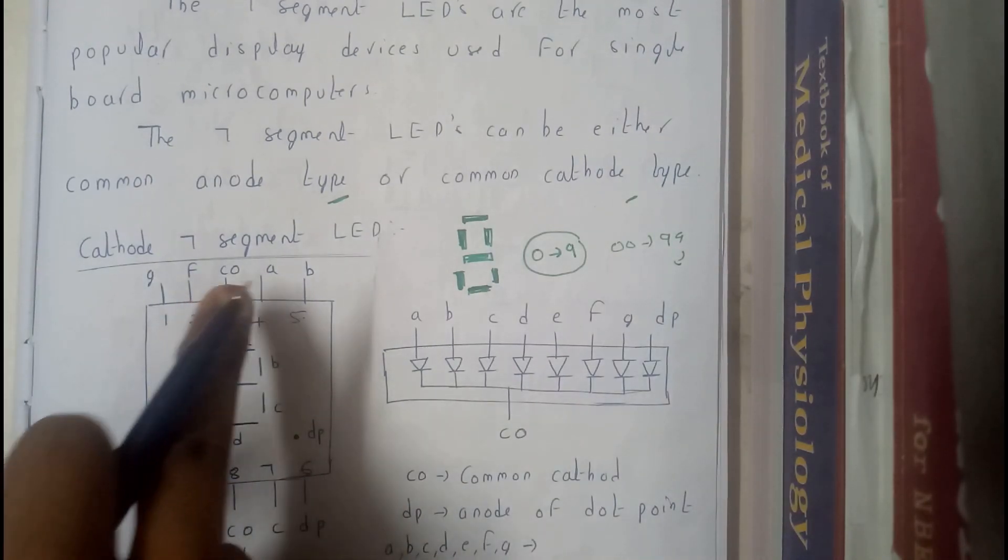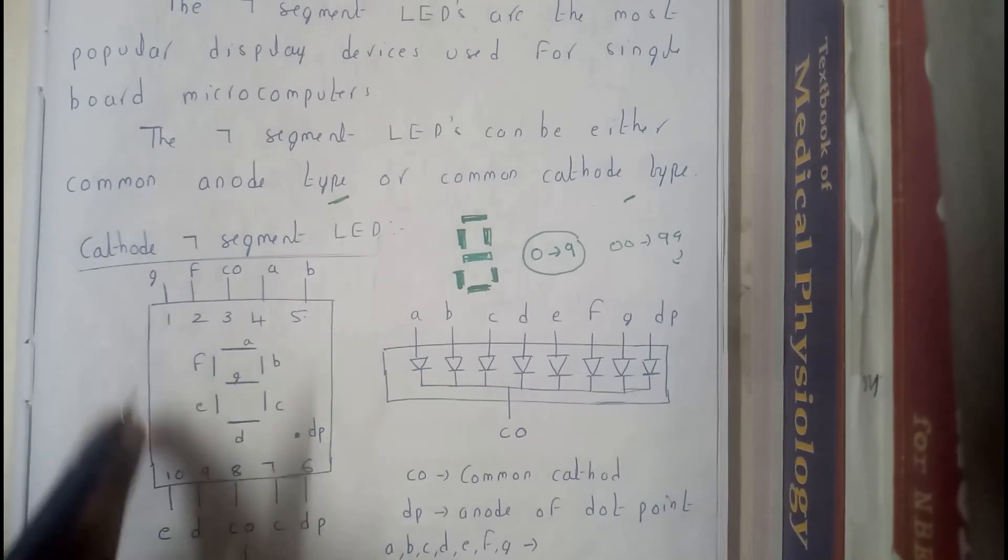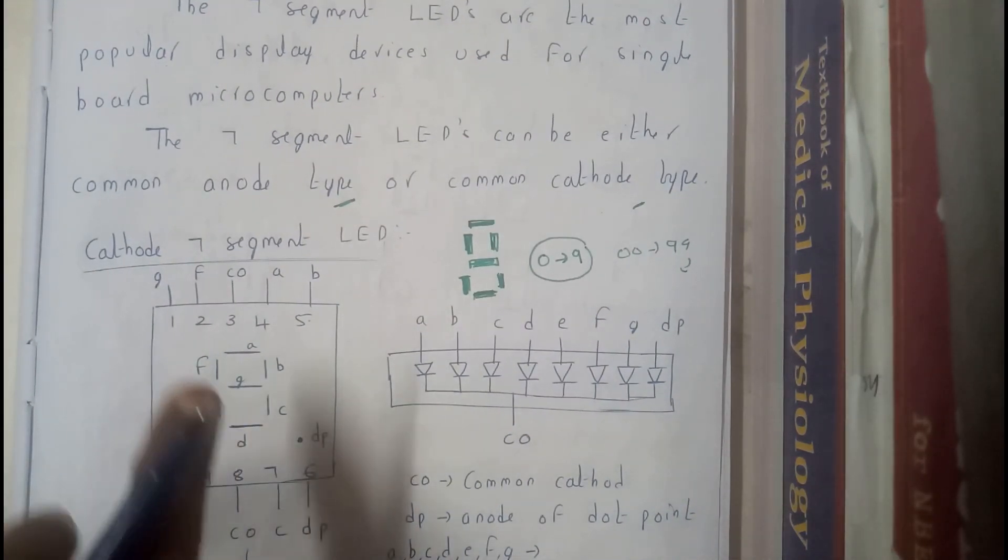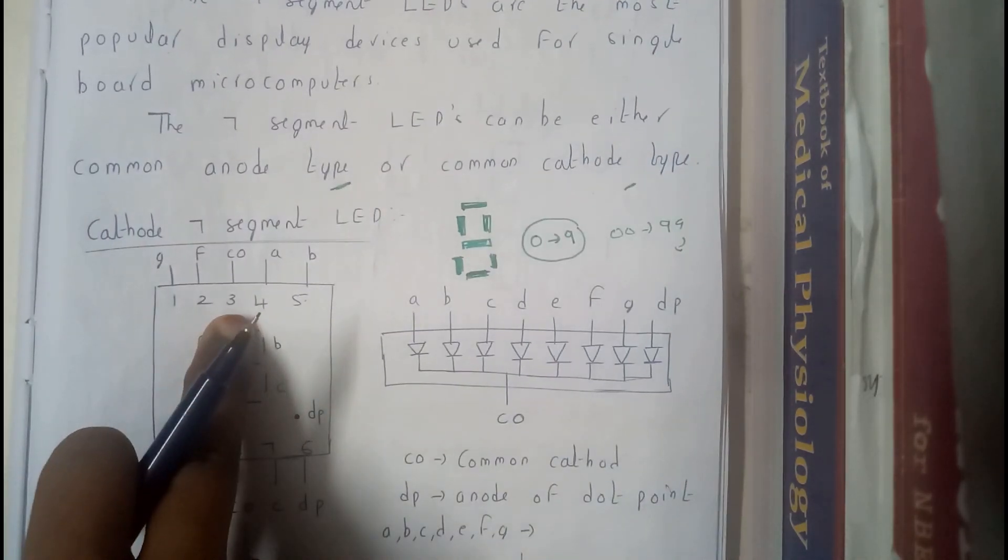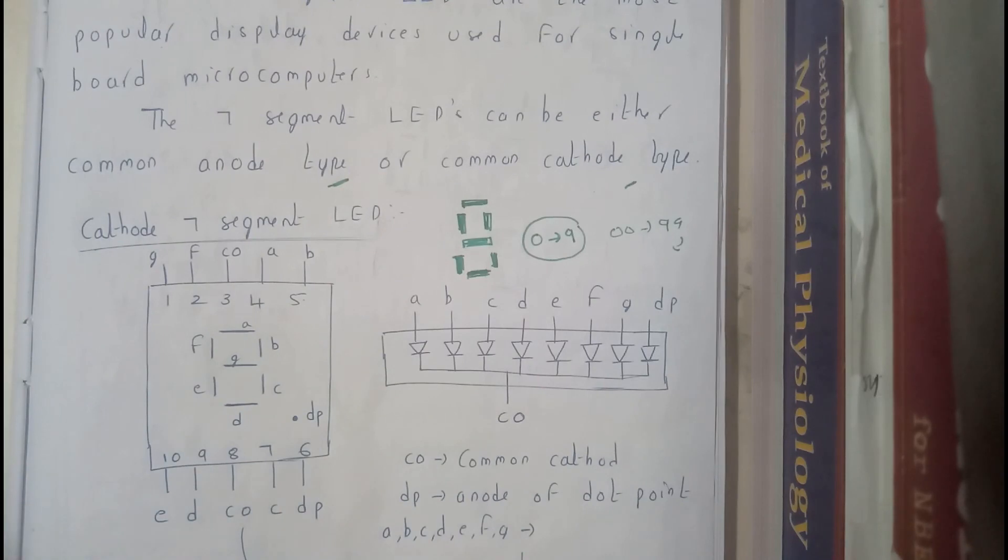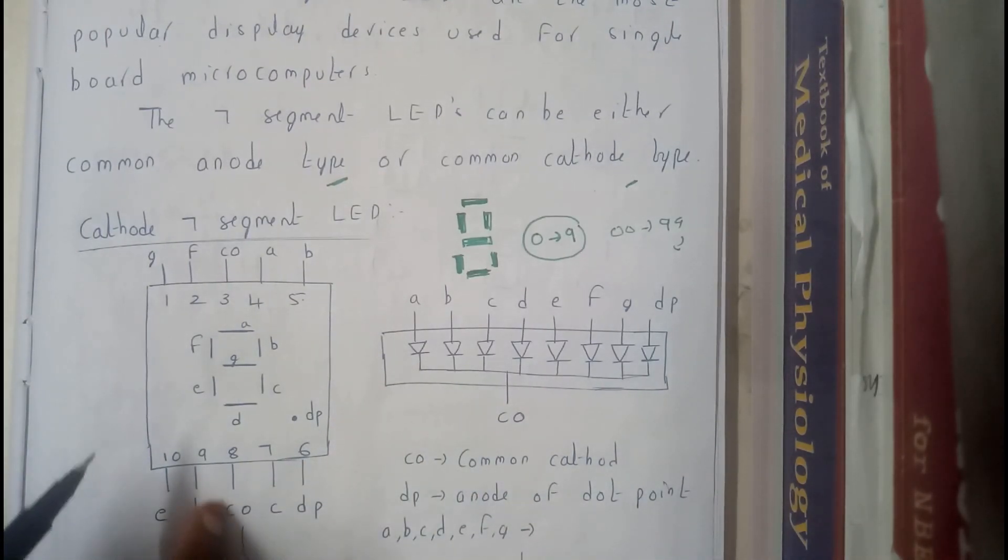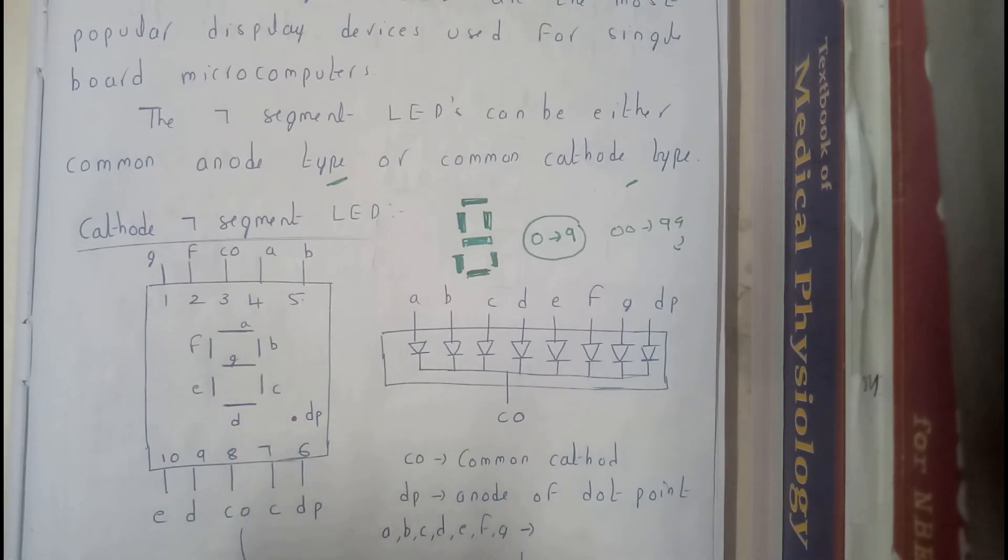Start writing numbers one, two, three, four, five, six, seven, eight, nine, ten. And now start placing ABCDs: a, b, c, d, e, f, g. Those are the seven letters. And in between, the third point will be CO, that is nothing but common cathode, and eighth point will also be CO. And at six it is DP, that is nothing but dot or decimal point.